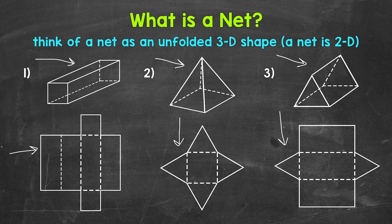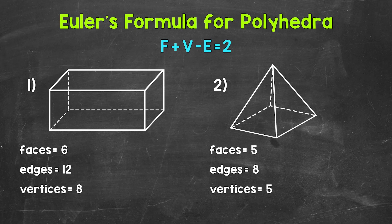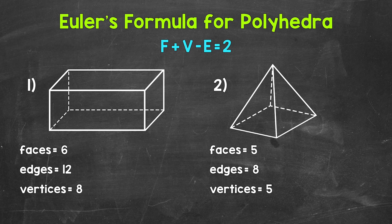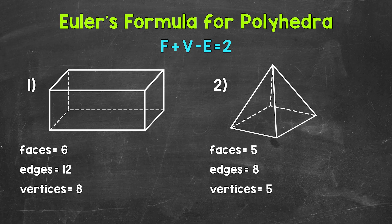Let's move on to Euler's formula for polyhedra. A mathematician named Leonard Euler figured out that there is a relationship between the number of faces, vertices, and edges of a polyhedron. Simply put, the sum of the number of faces and the number of vertices is going to be two more than the number of edges. We can write this as: faces plus vertices minus edges equals two.